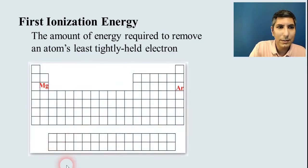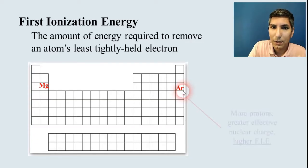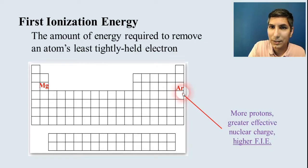So let's compare these two. We have magnesium and we have argon. Can you tell me which one has the greater first ionization energy? I hope you're thinking it's argon, right? And we know that. It's farther to the right. But don't say that as the reasoning. You want to say why. It's got more protons, greater effective nuclear charge.